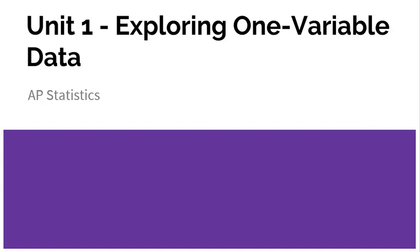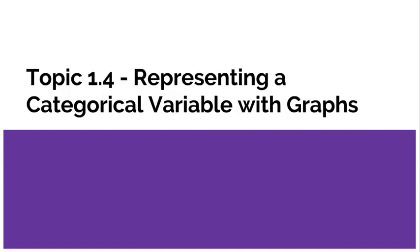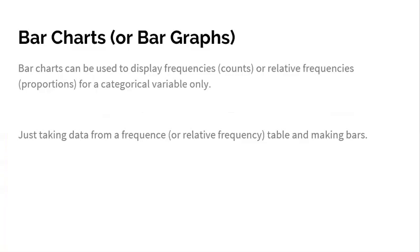Alright, another video here for Unit 1: Exploring One Variable Data. This video is going to focus on Topic 1.4 - Representing a Categorical Variable with Graphs. We've already learned an awful lot about categorical variables; now we just need to talk about how to make a graph of it.